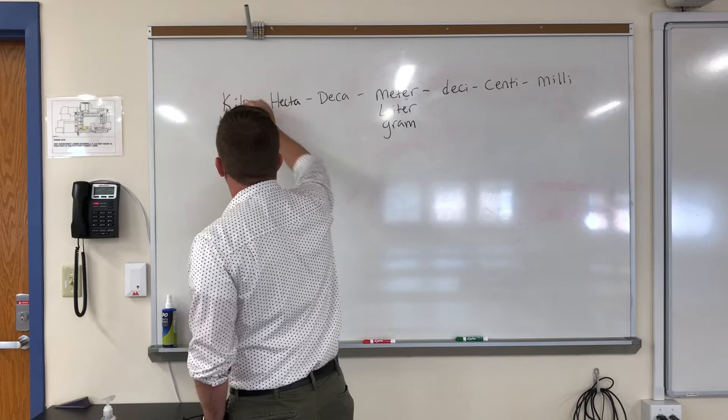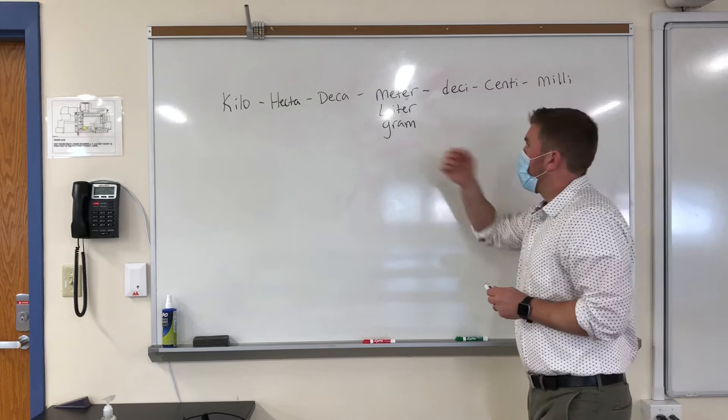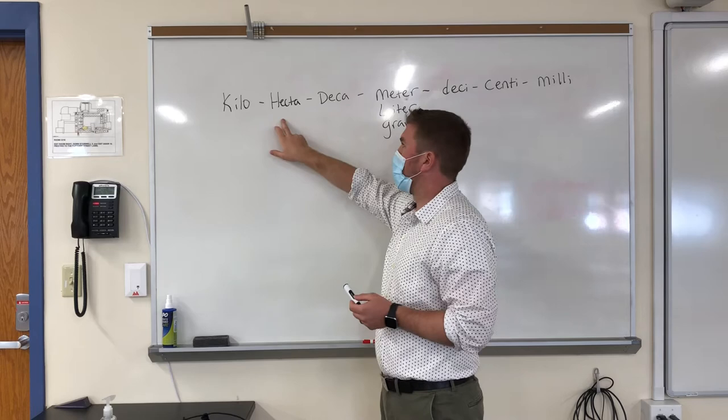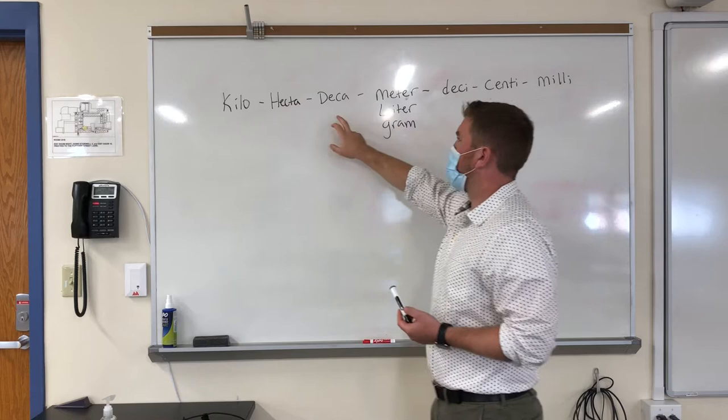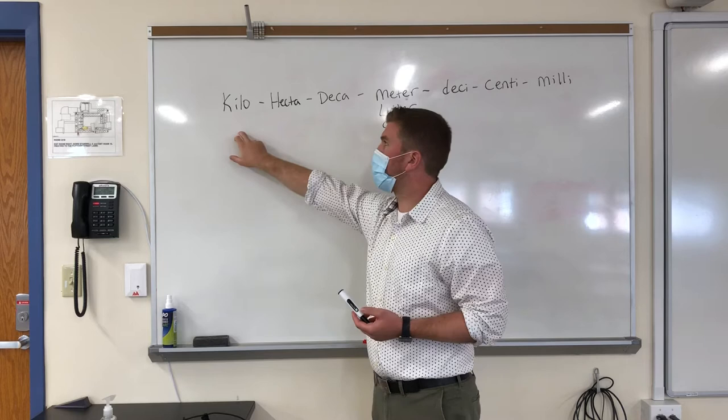When I go up, a decameter is 10 meters, a hectometer is 100 meters, a kilometer is 1,000 meters. That also works for liter and gram — so 10 liters, 100 liters, 1,000 liters; 10 grams, 100 grams, 1,000 grams.